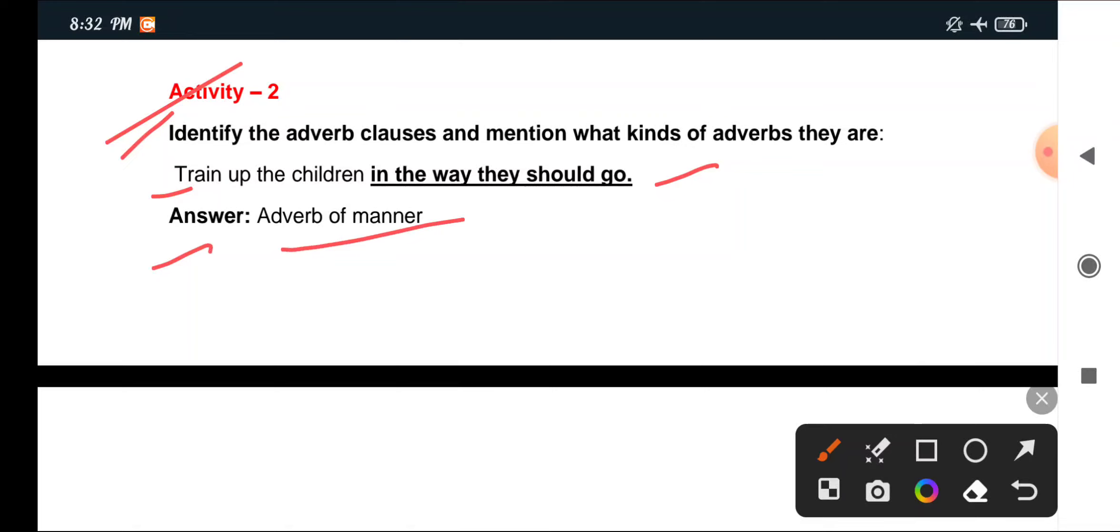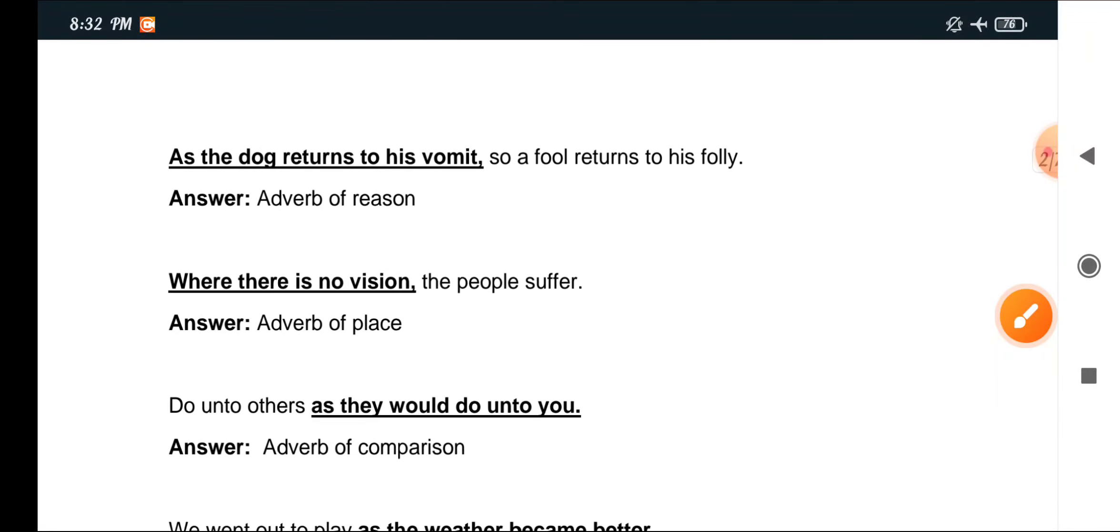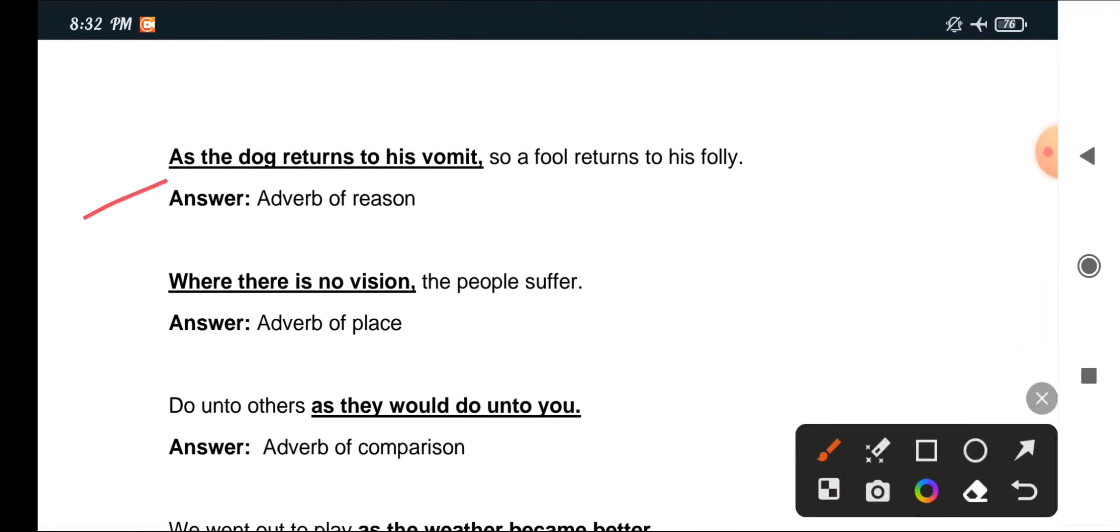Activity 2: Identify the adverb clauses and mention what kind of adverbs they are. Train up the children in the way they should go - adverb of manner. Where there is no reason, the people suffer - adverb of place. Do unto others as they would do unto you - adverb of comparison.